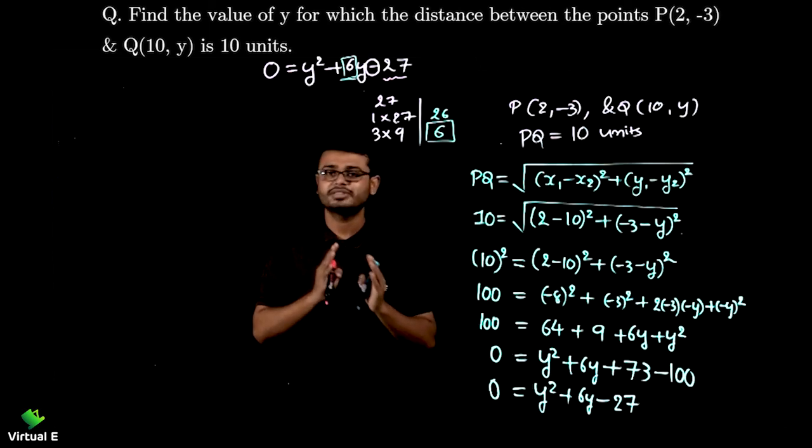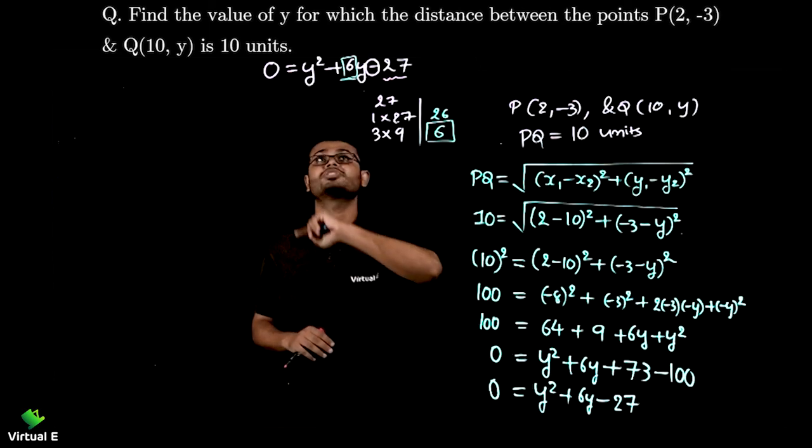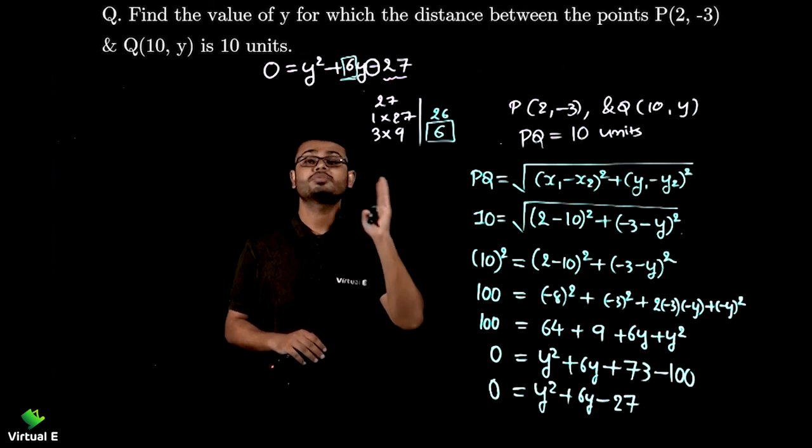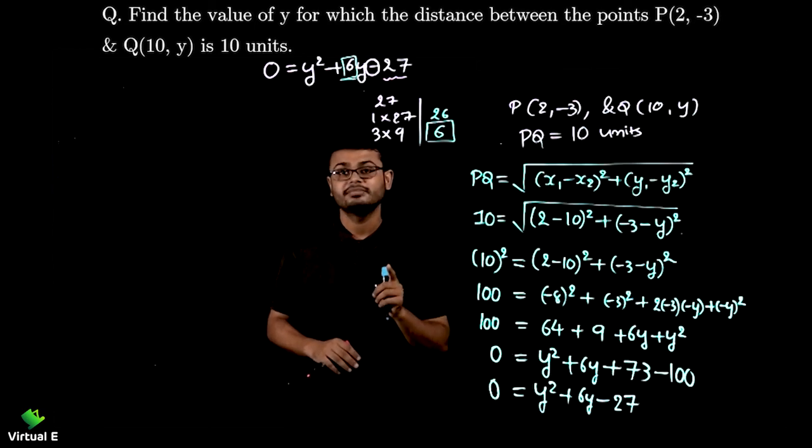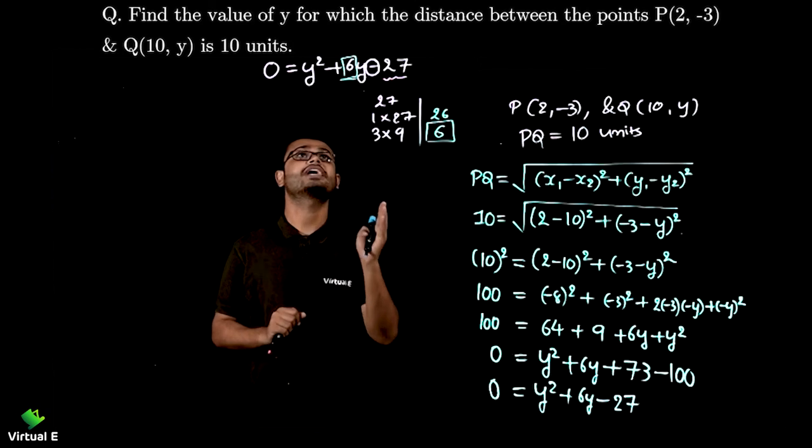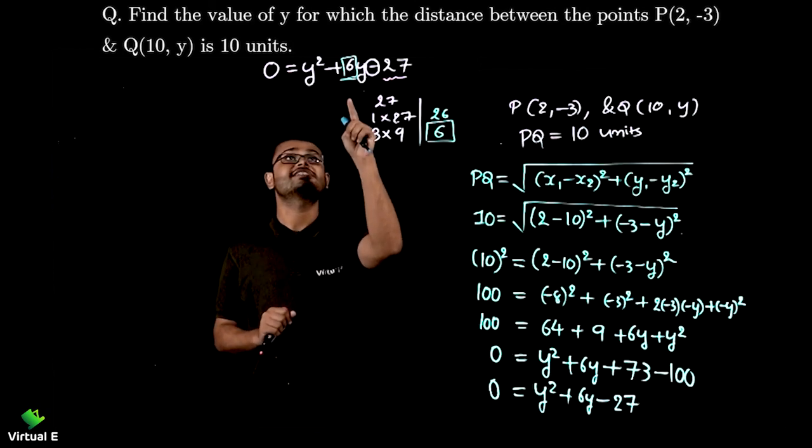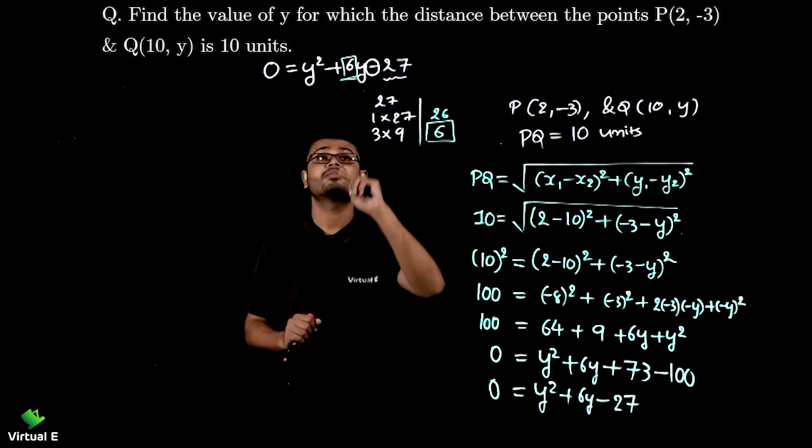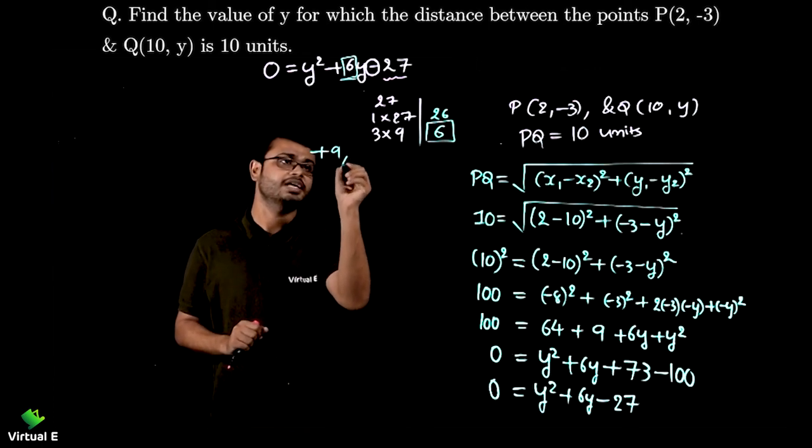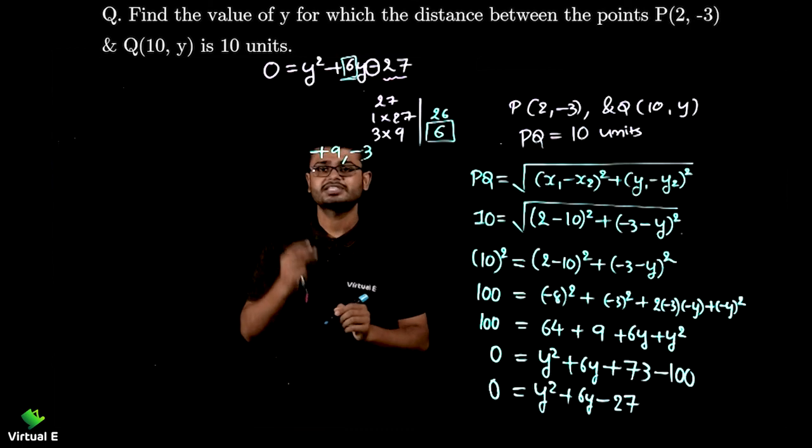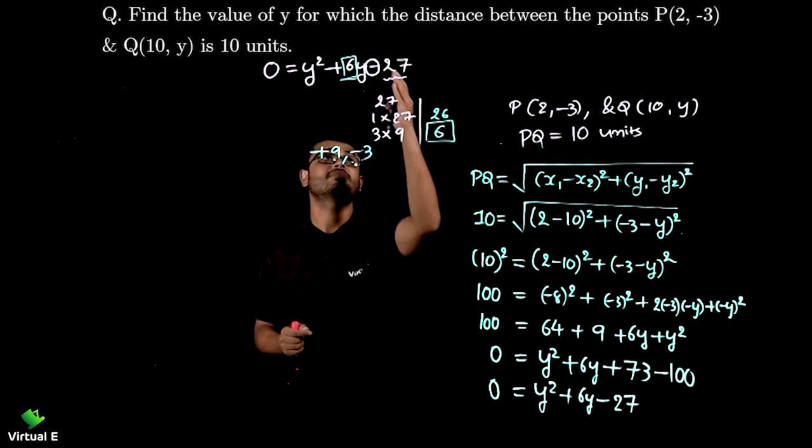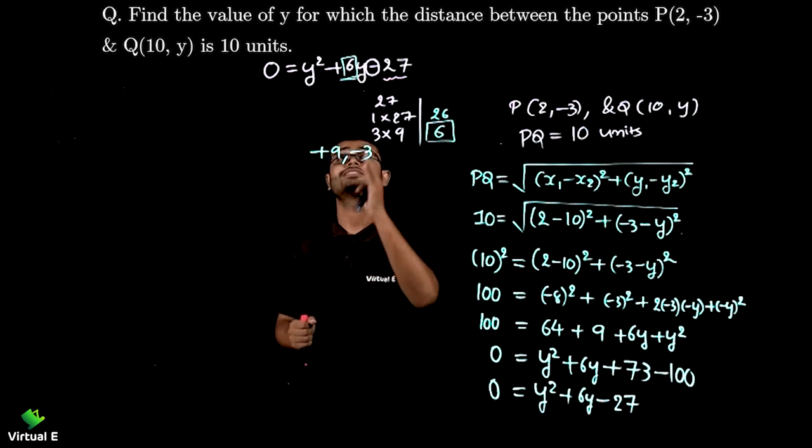Okay now let's talk about this sign. Because 6 is positive means sum is positive and 27 which is product is negative. So any one of them is negative and 1 is positive. So we need to decide which is positive. 6 is positive means bigger number will be positive. So I can write that my factor is +9 and -3. Let's track it. 9 into 3 is 27, plus minus minus is -27. Done.